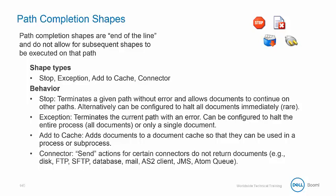The stop shape terminates a given path without error and allows documents to continue on to other paths. The exception shape will terminate the current path with an error. The add to cache shape adds documents to a document cache so that they can be used in a process or subprocess. A connector with send actions for certain connectors — such as disk, FTP, database, mail, and so on — does not return documents.